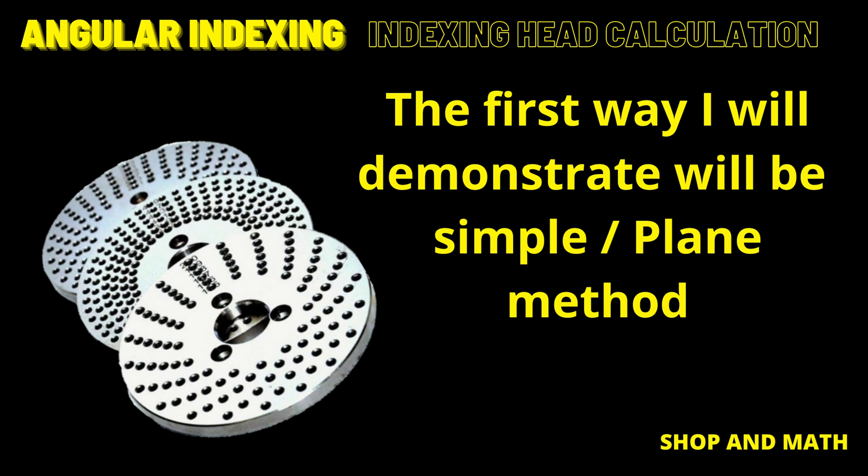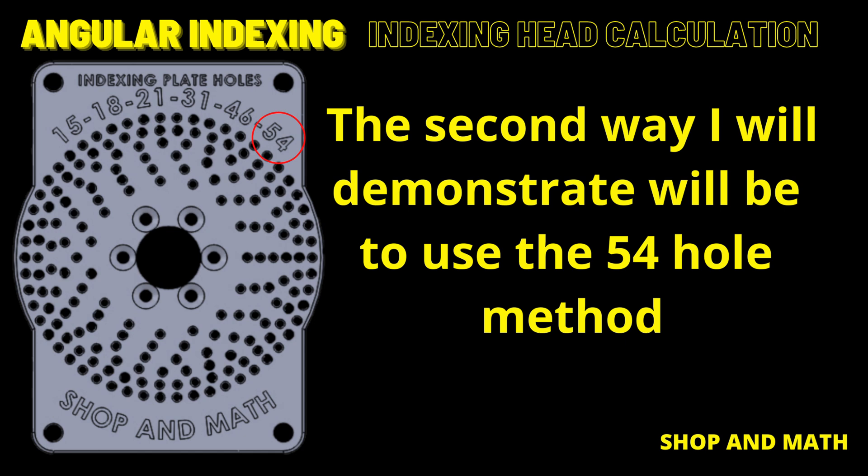We're also going to be using all five different plates, which include the Cincinnati and the three brown and sharp plates. That gives us the widest options possible. The second way of calculating angles on an indexing head is using the 54-hole plate in the Cincinnati other side. It can also calculate all angles up to 10 minutes.